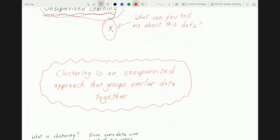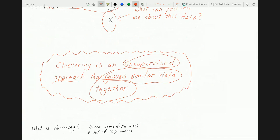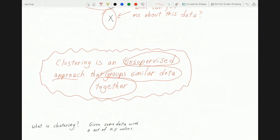Clustering is an unsupervised approach that essentially groups similar data together. I mean, there are many definitions, but for your purpose, that's what clustering is. You look at data, and you group similar ones together.